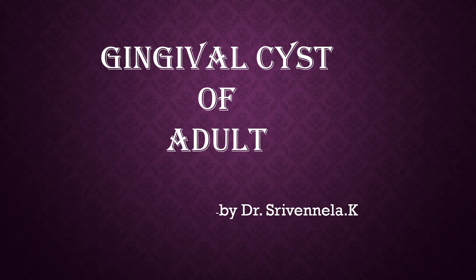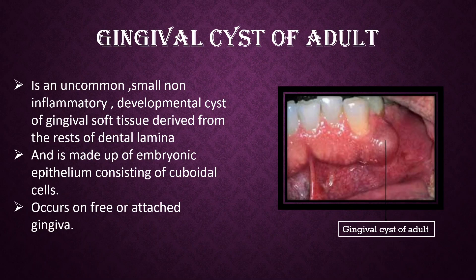Hello everyone, I am Dr. Sri Vanilla. Today's topic is Gingival cyst of adult. Gingival cyst of adult is an uncommon, small, non-inflammatory developmental cyst of gingival soft tissue derived from the rest of the dental lamina, and is made up of embryonic epithelium consisting of cuboidal cells. It occurs on free or attached gingiva.